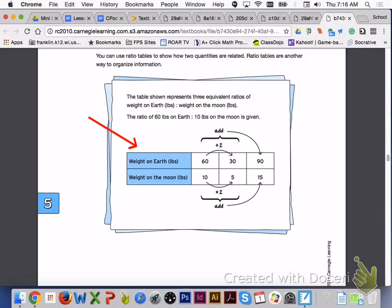The table shown represents three equivalent ratios of weight on earth in pounds to weight on the moon in pounds. The ratio of 60 pounds on earth to 10 pounds on the moon is given.